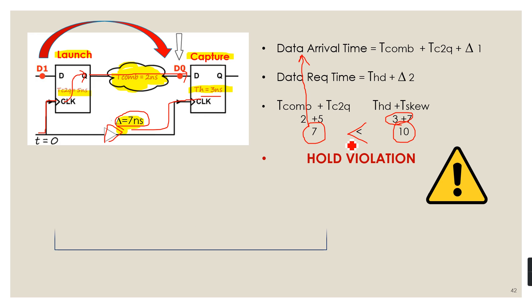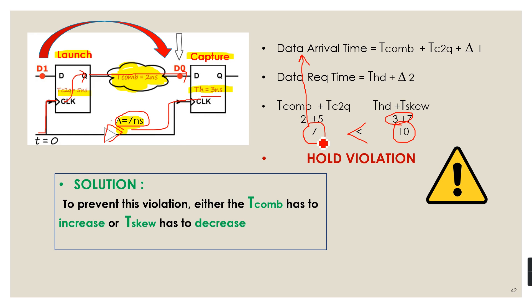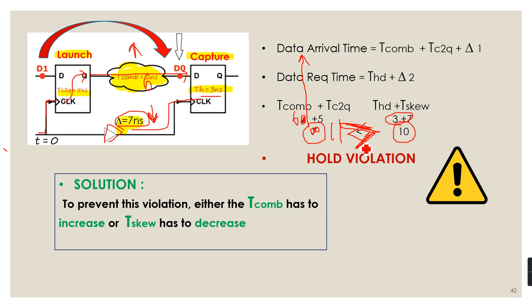To prevent this hold violation, we have to either increase the combinational logic delay or decrease the clock-to-Q delay. For example, if the new combinational logic delay is 6 ns, the data arrival time becomes 6 + 5 = 11 ns, which is greater than 10 ns — so there is no hold violation. This is the way we can prevent hold and setup violations.